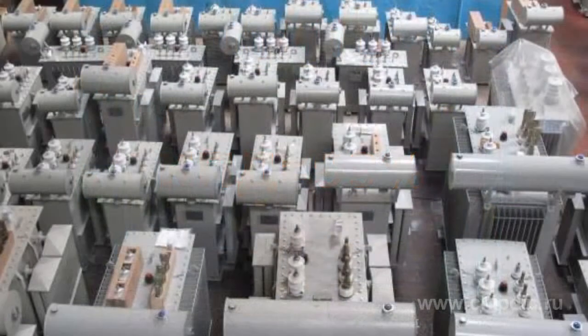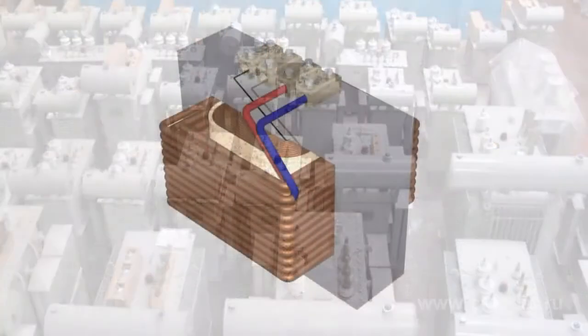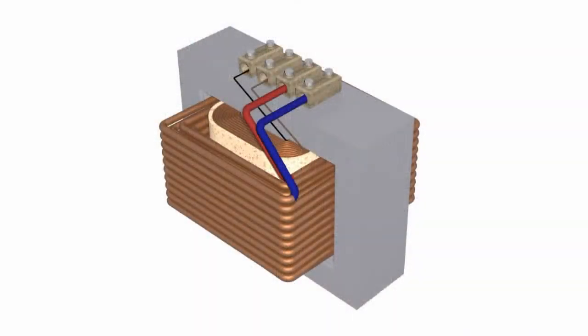A transformer consists of some wire wraps situated on the magnetic conductor, also called the core, made of ferromagnetic alloy. The transformer operating principle is based on the electromagnetic induction phenomenon.